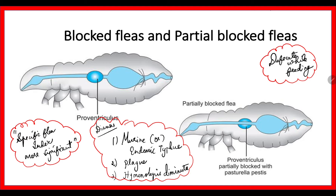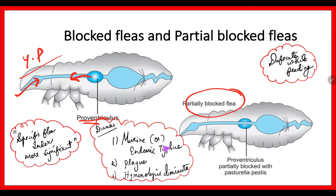An important mechanism is blocked flea and partially blocked flea. When the flea sucks blood, it also ingests the bacteria Yersinia pestis. This Yersinia pestis proliferates in the proventriculus of the flea, eventually blocking it. When it bites, it infects the person with colonized Yersinia pestis, causing plague. A fully blocked flea dies soon. A partially blocked flea lives longer because there is still an intact pathway to take in blood, so the infectivity rate of a partially blocked flea is higher. The diseases caused by rat flea include murine typhus (also called endemic typhus), rat fever, plague, and Hymenolepis nana infestation.